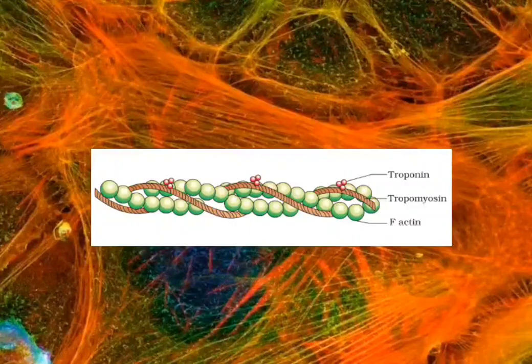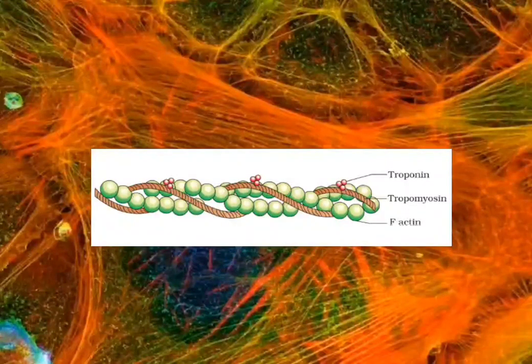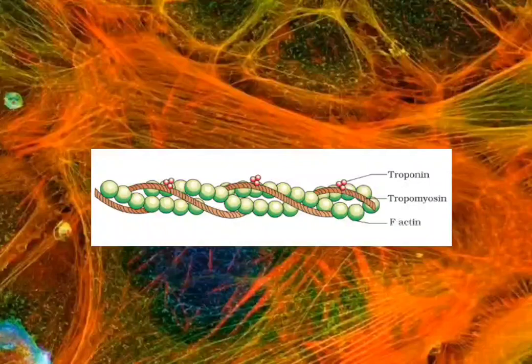This protein forms into filaments that help make up the skeleton of cells, giving them shape. And as the actin filaments elongate, they work like muscles, pushing against the inner membrane of a cell to move it forward.